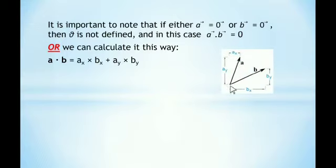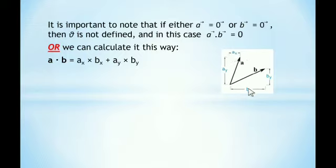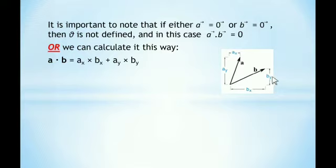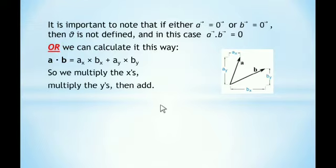Look at the diagram — this is vector a and this one is vector b. The x component is ax, the y component is ay; the perpendicular is the y component and horizontal is the x component. Similarly for vector b: bx is the x component and by is the y component. So if we multiply the x component of a with the x component of b, and the y component of a with the y component of b, and then add, this will be the dot product. We multiply the x's, multiply the y's, and then add.